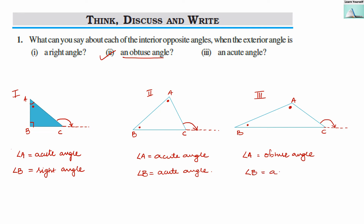This is based on the property that if I denote the exterior obtuse angle as angle E, then angle E equals angle A plus angle B. If angle E is greater than 90 degrees, then the sum of angle A and B is also greater than 90 degrees. When the sum is greater than 90 degrees, there are three possibilities: one can be a right angle and the other acute; both can be acute like 60° and 60°; or one can be obtuse like 92° or 93° and the other acute.